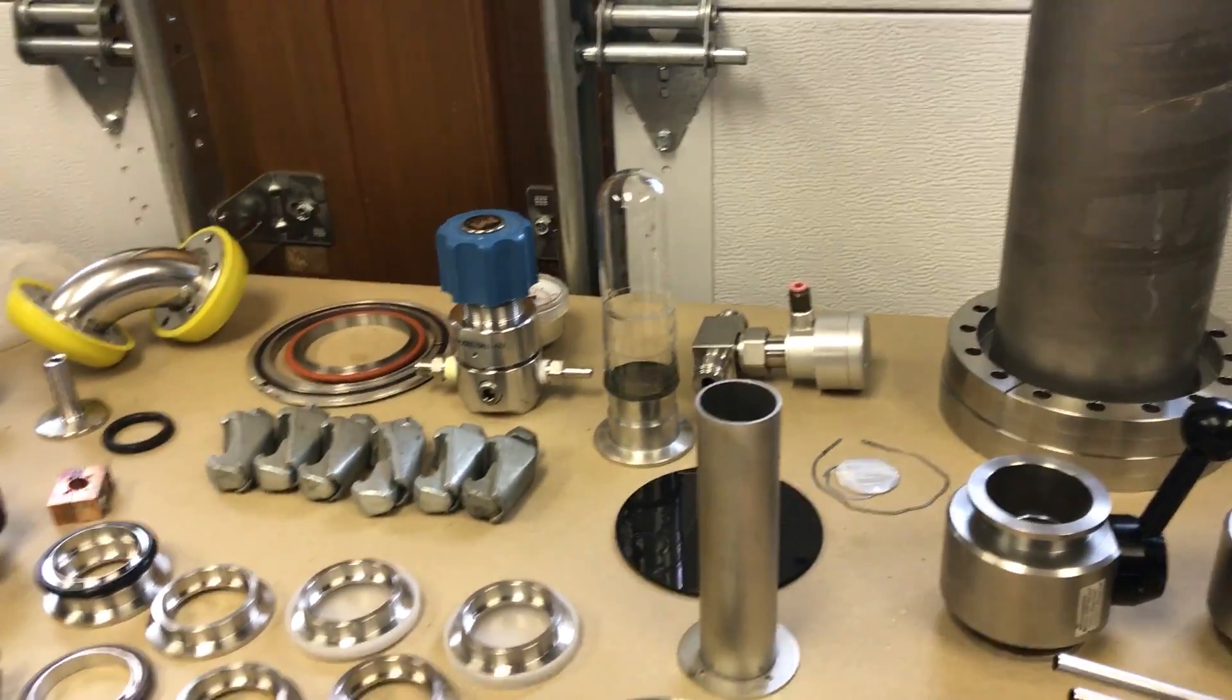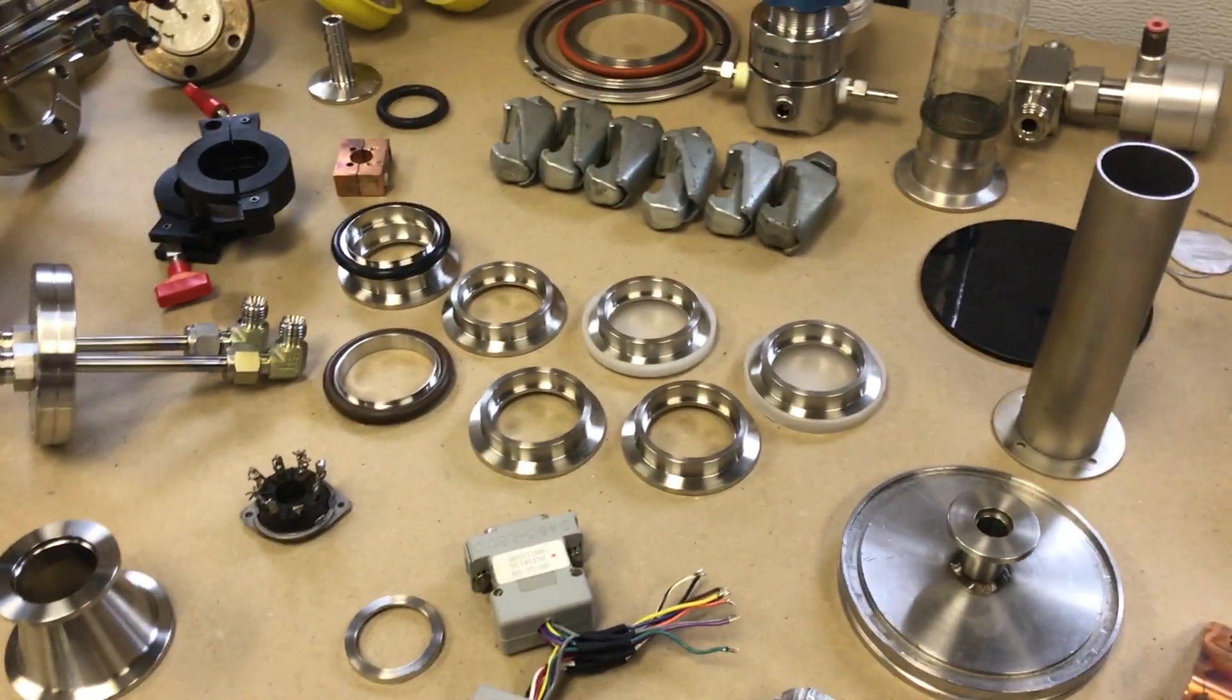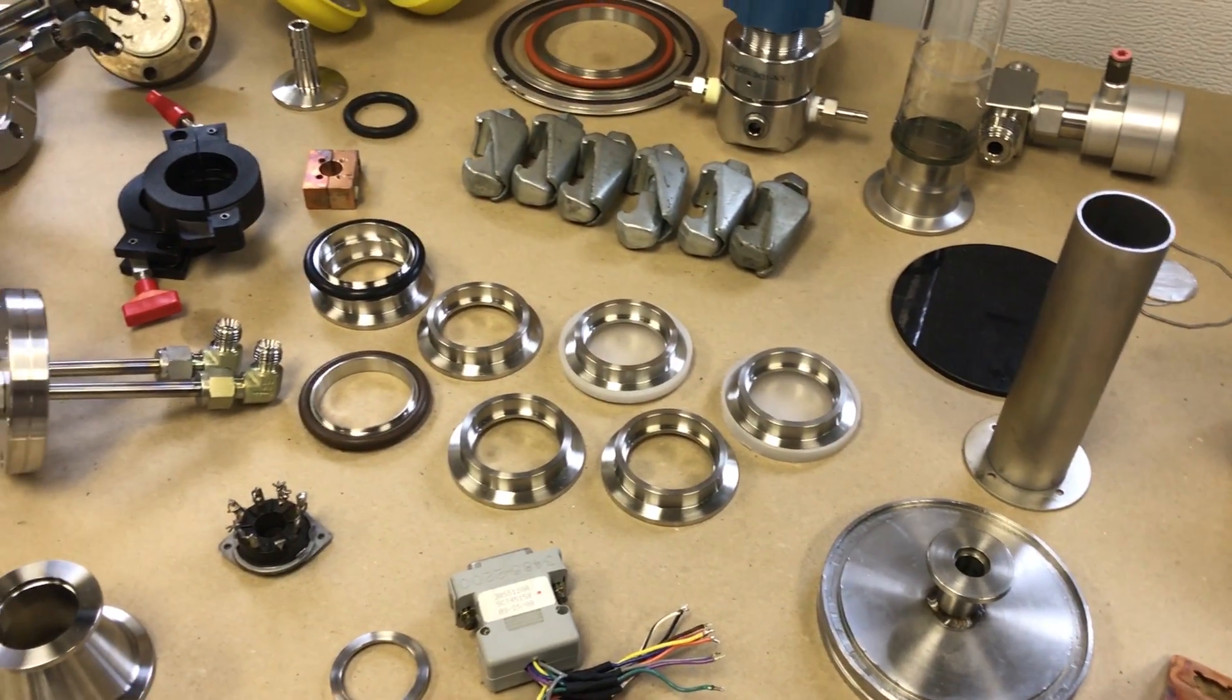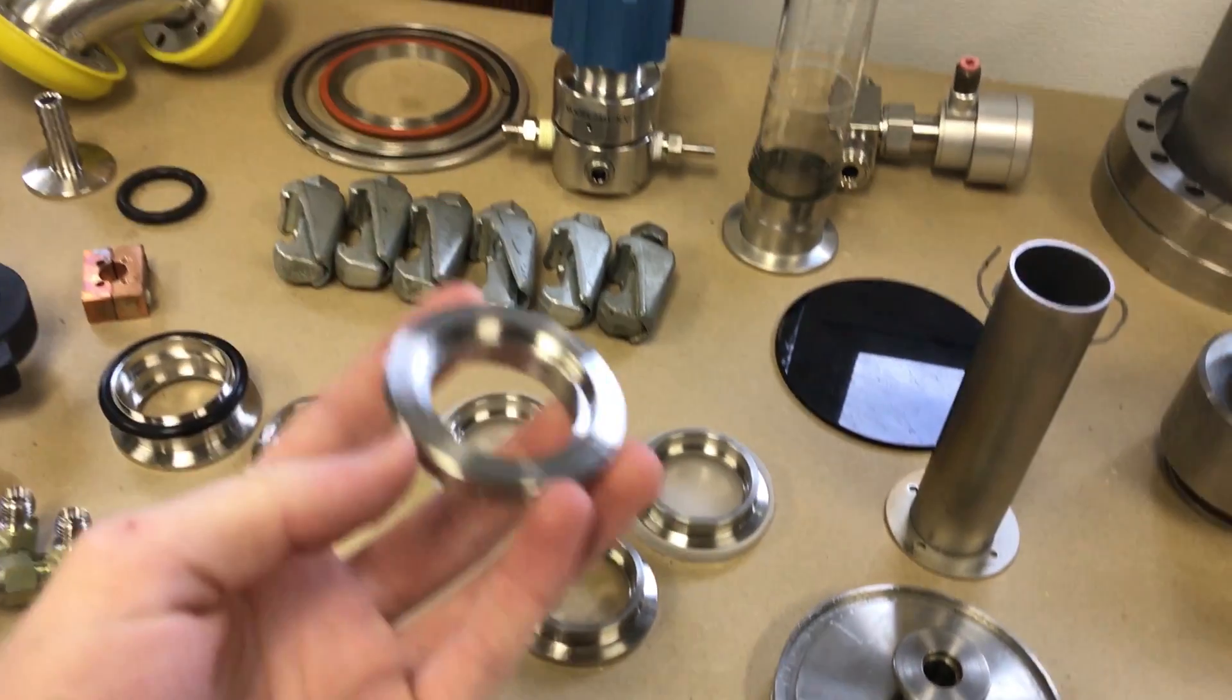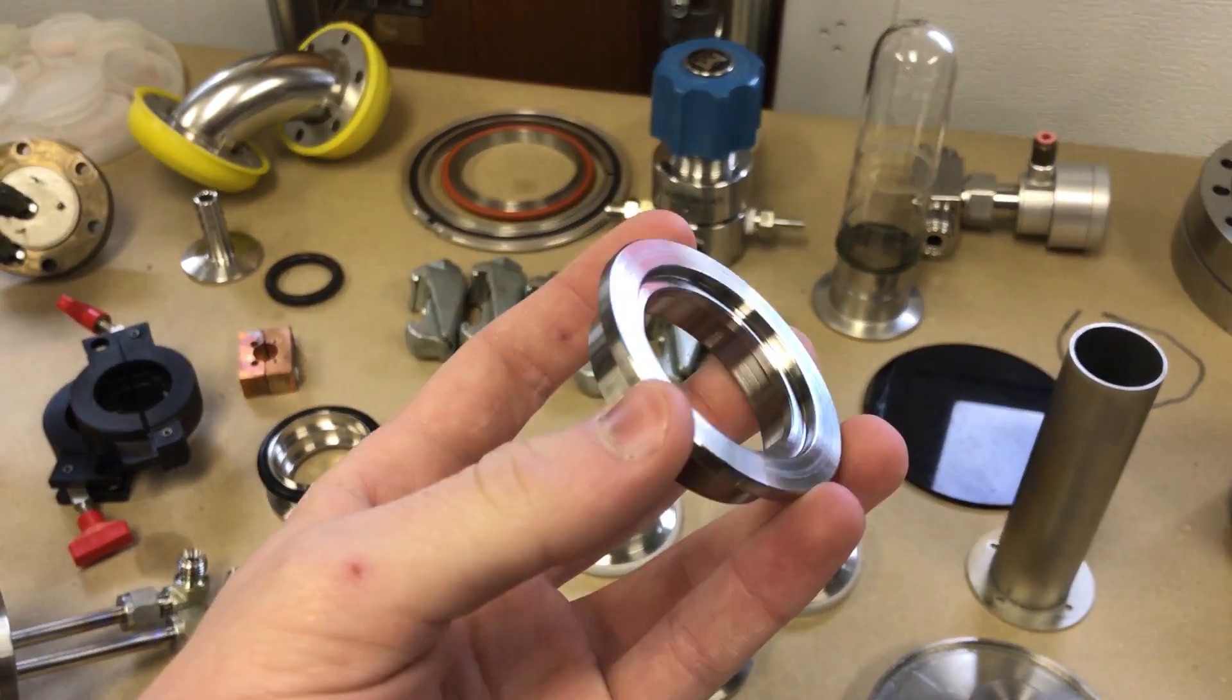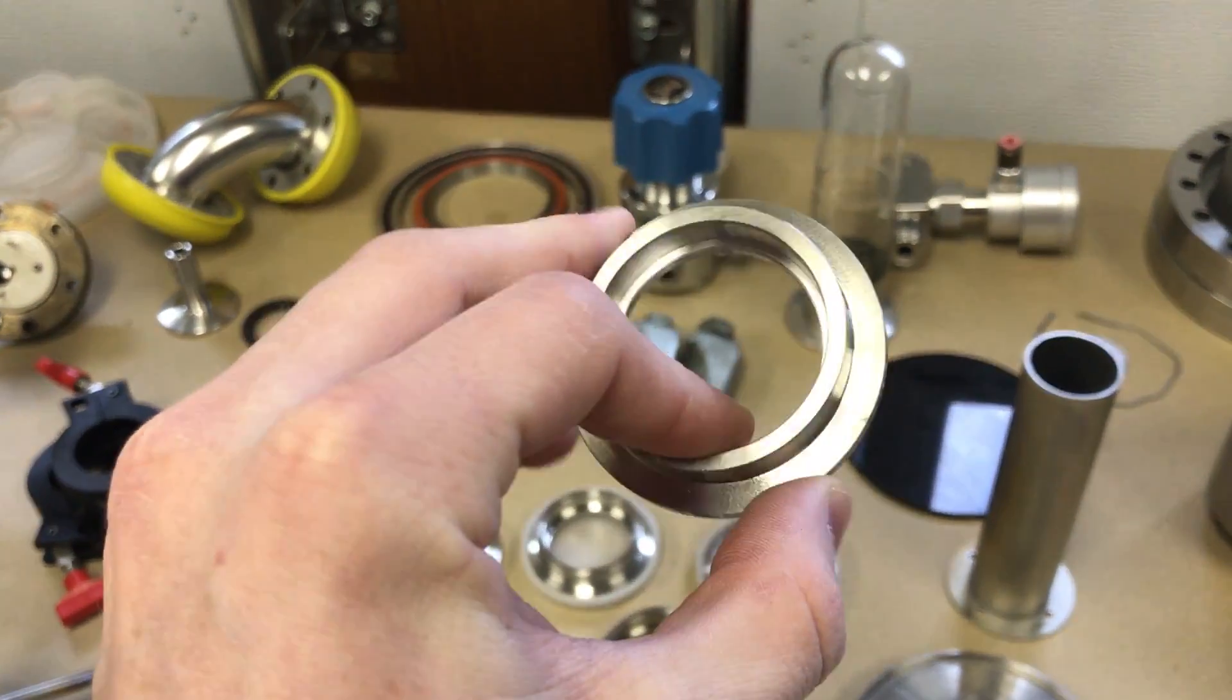And the next most common thing you'll see are quick flange. CF, or KF rather. CF is conflat. So these are KF, also known as NW, I think, but there's a few names for them.